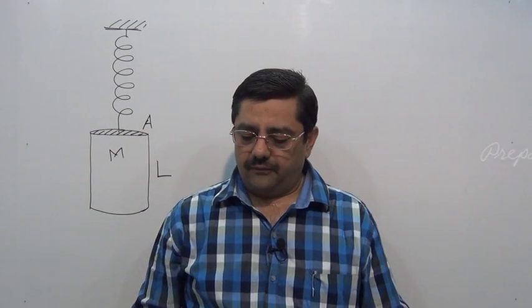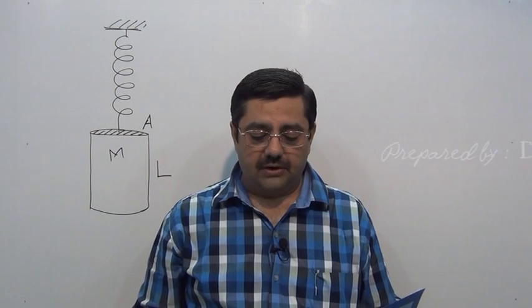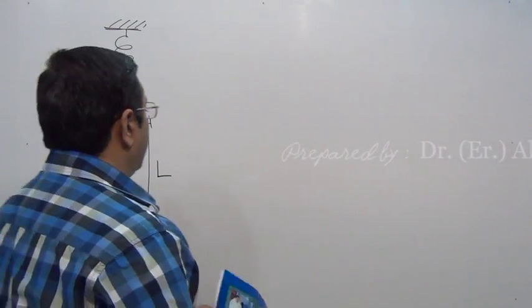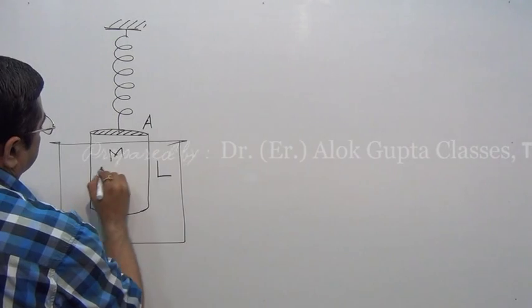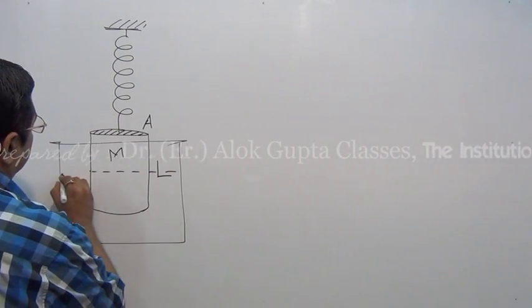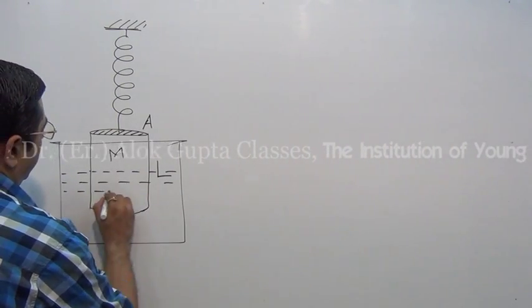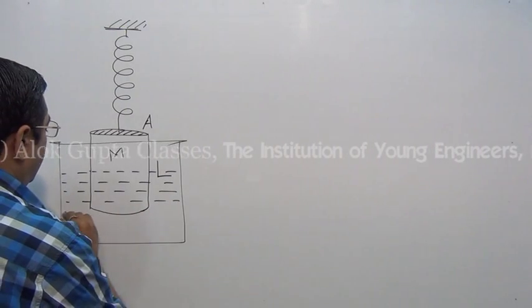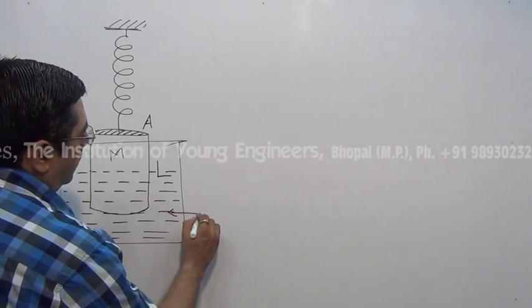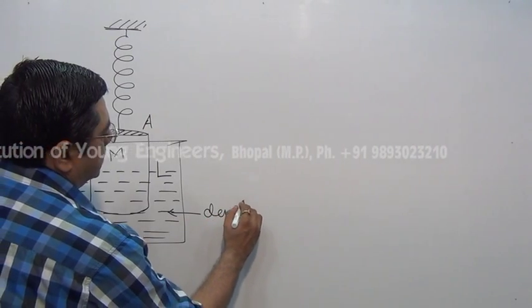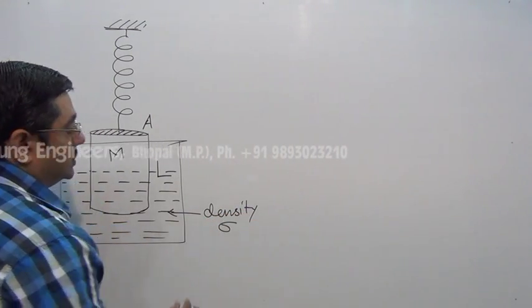Cross sectional area is also given, it is A. Such that it is half submerged in a liquid of density sigma. It is half submerged means half of its length is immersed in the liquid. This is the liquid of density sigma.